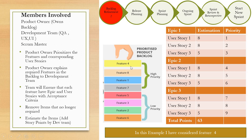Story points are the effort required by the development team to bring a user story to life. As you can see, the product backlog has been prioritized. For example, feature four is the first feature — it has three epics and three user stories for each epic, and estimation and priority have been set for each user story of feature four.